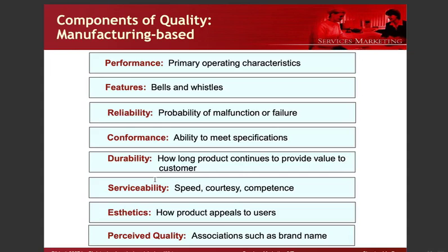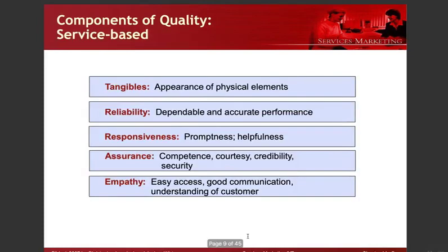Perceived quality relates to associations such as brand name and image. In service quality, we have five dimensions according to the Parasuraman model: tangibles — appearance of physical elements; reliability — dependable and accurate performance; responsiveness — promptness and helpfulness; assurance — competence, courtesy, credibility, and security; and finally empathy — easy access, good communications, and understanding of customers.